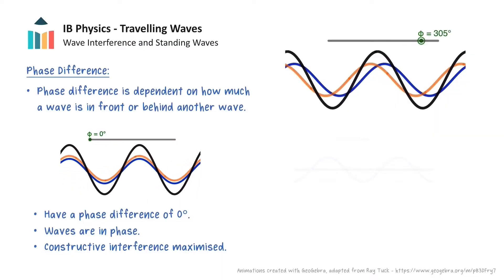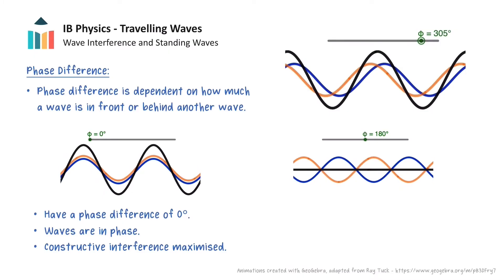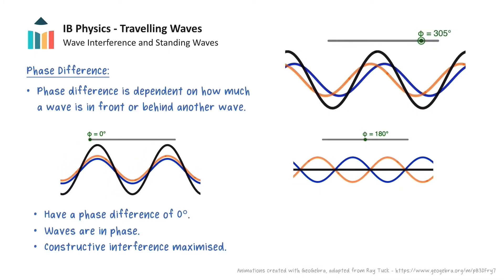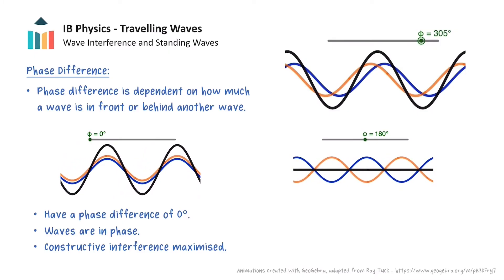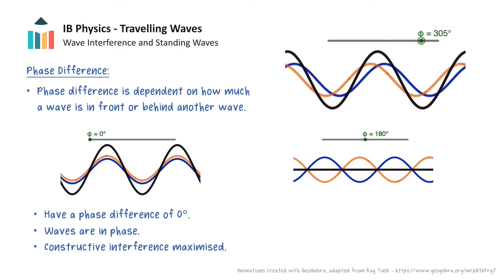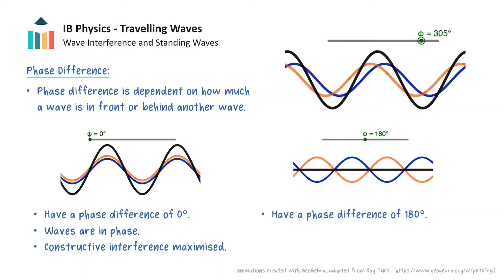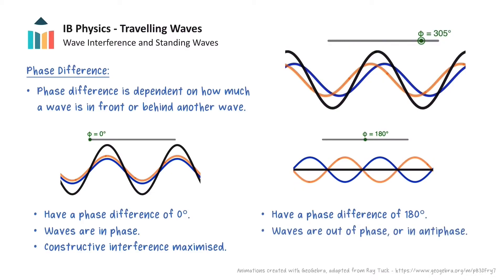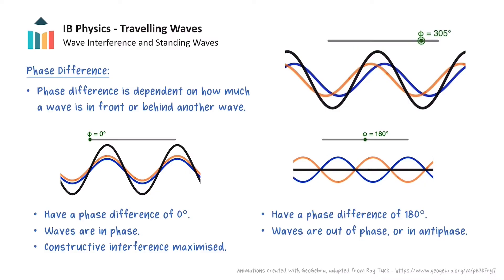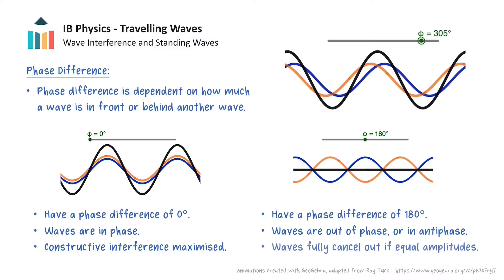The second scenario occurs when the crest of one wave aligns with the trough of the other wave. Here, one wave is half a wavelength behind the other, resulting in the oscillations of the individual particles of the waves having a phase difference of 180 degrees at any point. The waves are said to be completely out of phase, or in antiphase with each other. In addition, if the two waves have equal amplitude, then the two waves will fully cancel out as a result of destructive interference.